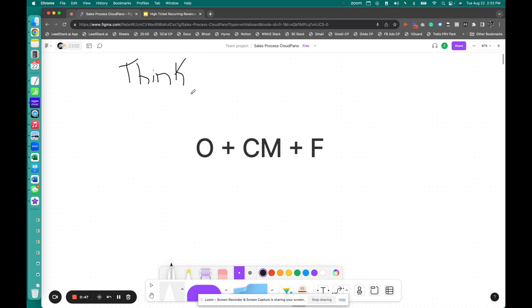So when I talk about High Ticket Agency type services, what am I referring to? I'm referring to offers. So you see this O plus CM plus F equation. What's this stand for?